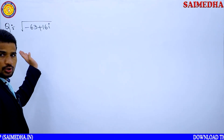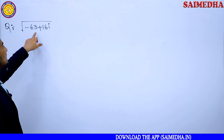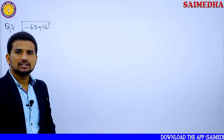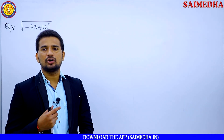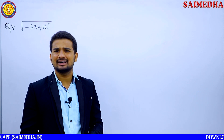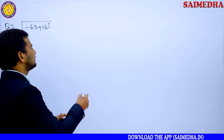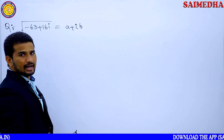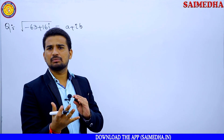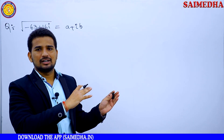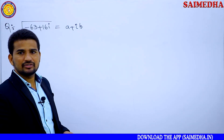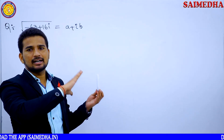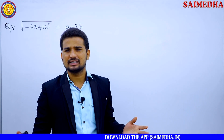The question is: find the square root of (-63 + 16i). To find the square root of a complex number, you generally have certain formulas. You can do it with a formula, or you can write this as (a + ib), and by squaring both sides you get (a² - b²) + i(2ab) on the right-hand side.